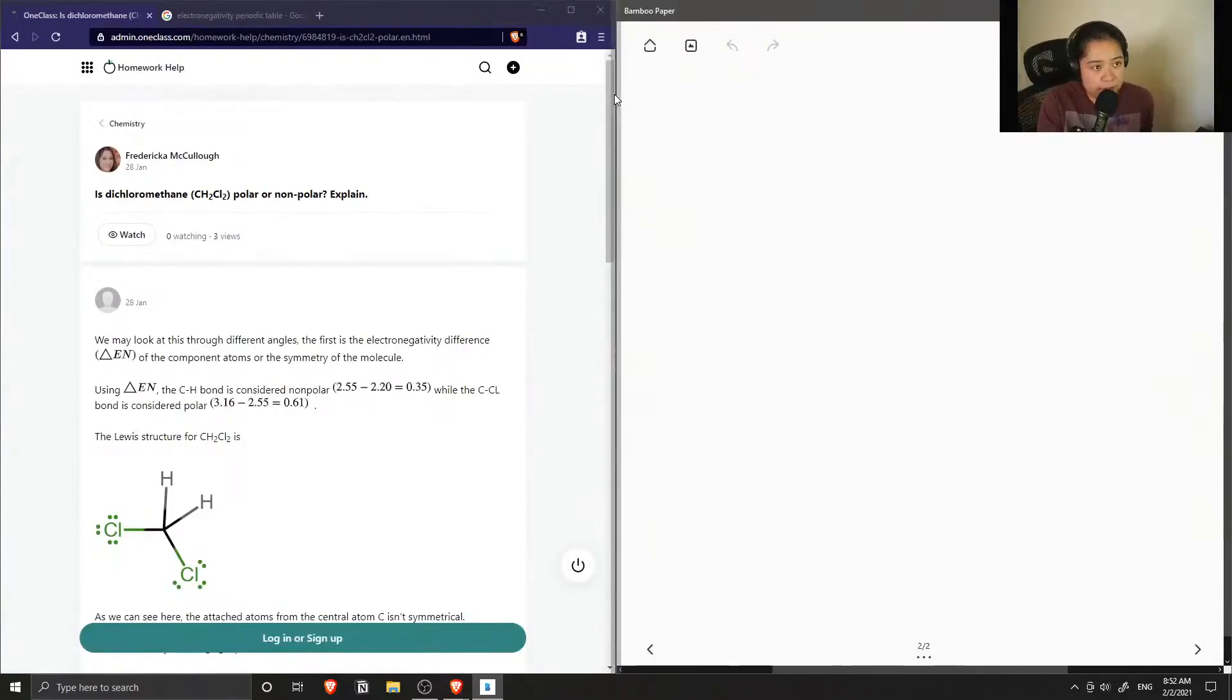Okay, so question number two is dichloromethane, which has this formula CH2Cl2, polar or nonpolar, explain.